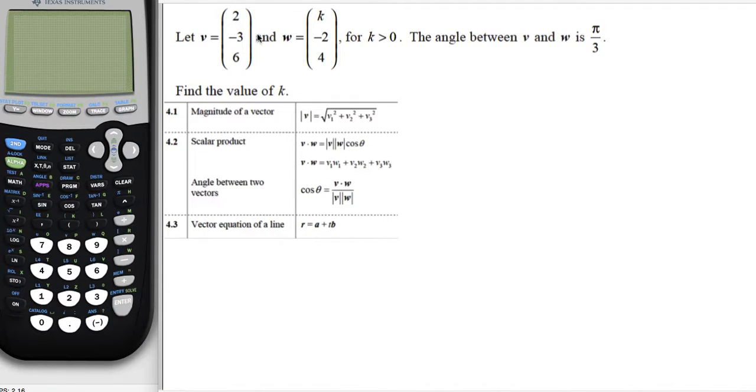Let v equal 2, negative 3, 6, and w equal k, negative 2, 4, for k is greater than 0. The angle between v and w is pi over 3. Find the value of k.